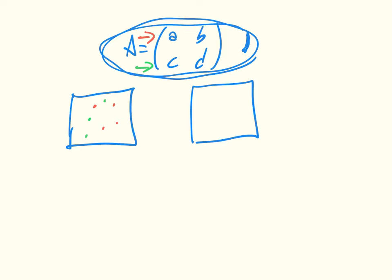So for example, let's say we pick an individual of the first type — that would be our reproduce step. We would now have a fifth individual of the first type, giving us eight individuals in total.